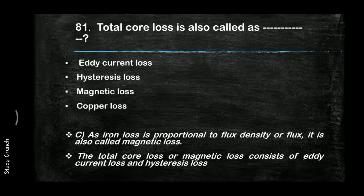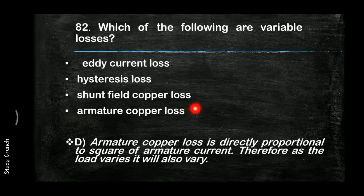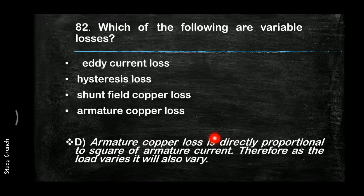Which of the following are variable losses? The answer is armature copper loss is the variable loss. As we know, it is directly proportional to the square of armature current, therefore as the load varies, it will also vary.